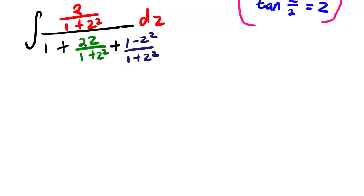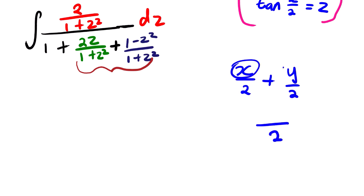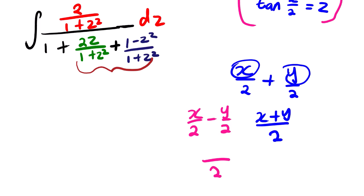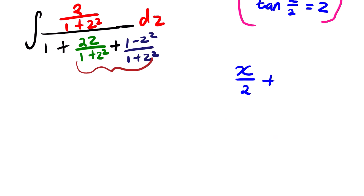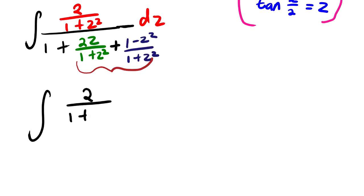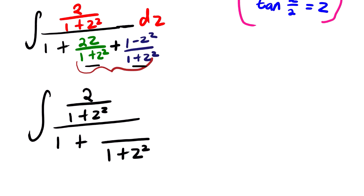We need to find the sum of these two. Remember that when we have two fractions with a common denominator, we simply take one common denominator and then add the numerators. Similarly, the difference of two fractions, x over 2 minus y over 2, we take the common denominator and find the difference of the numerators. In this case, we have a common denominator, so we take one denominator and add the numerators.